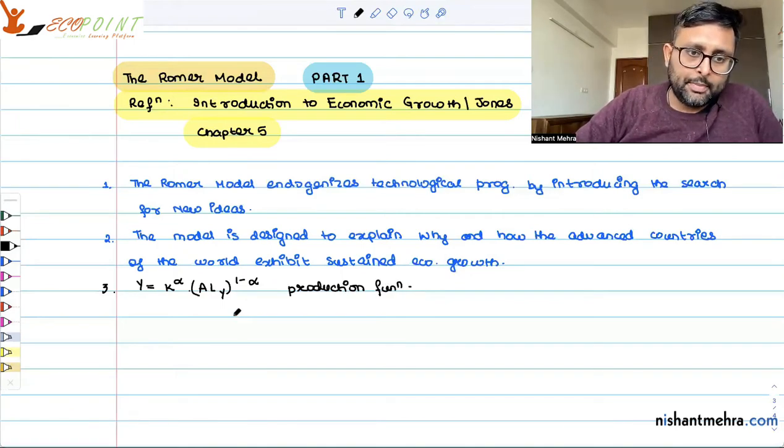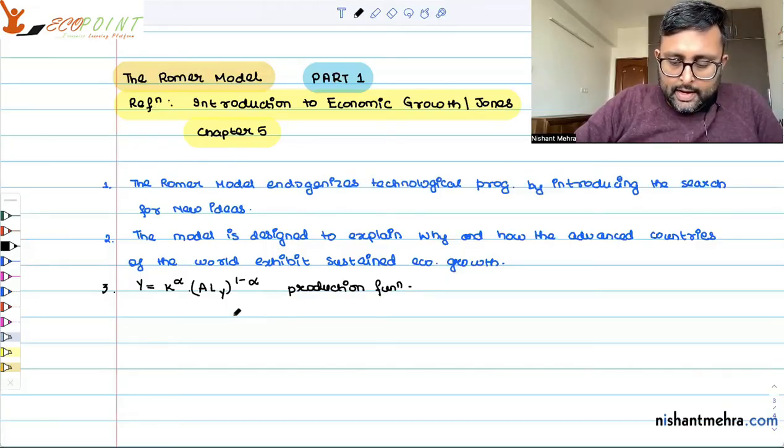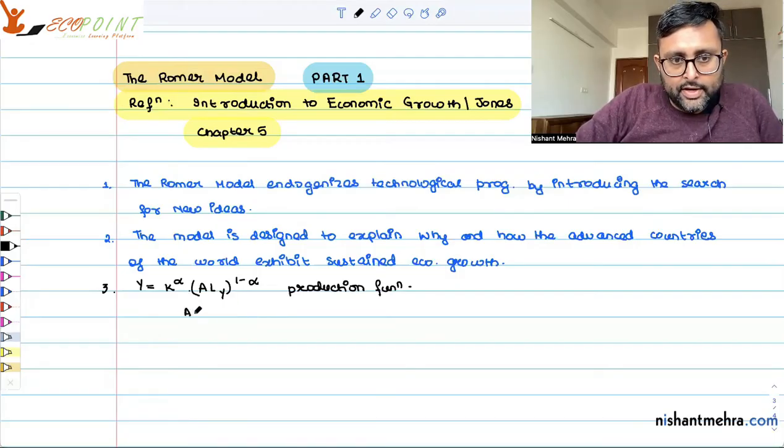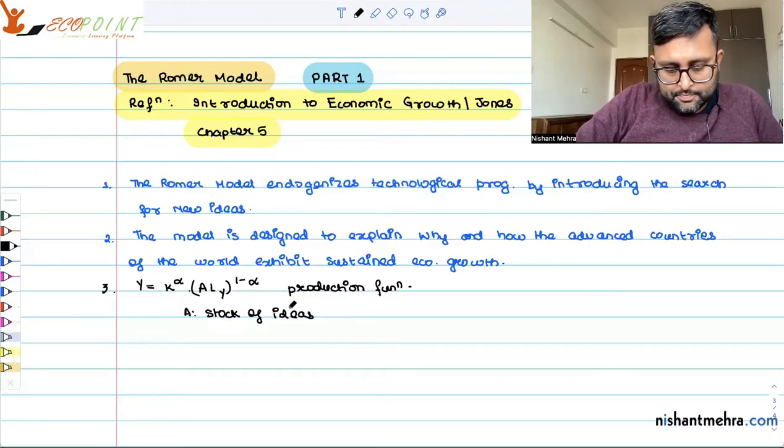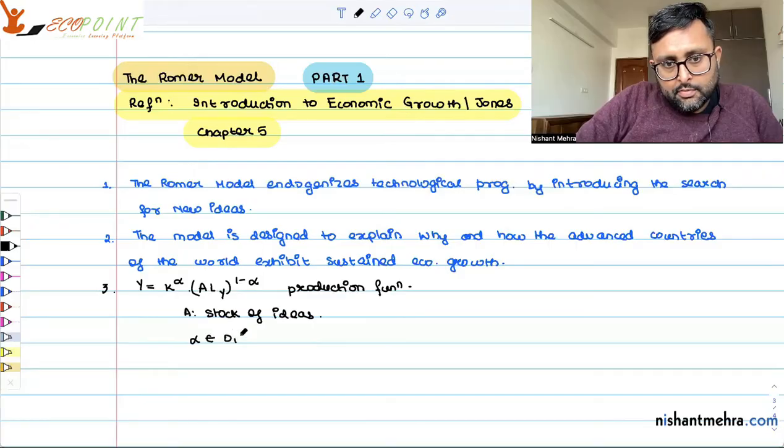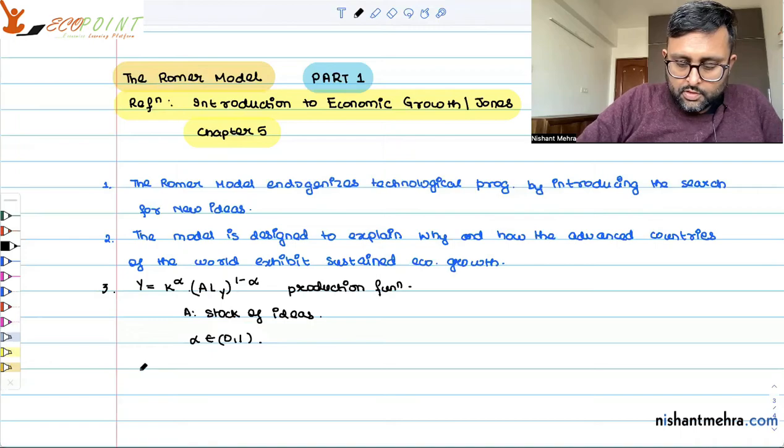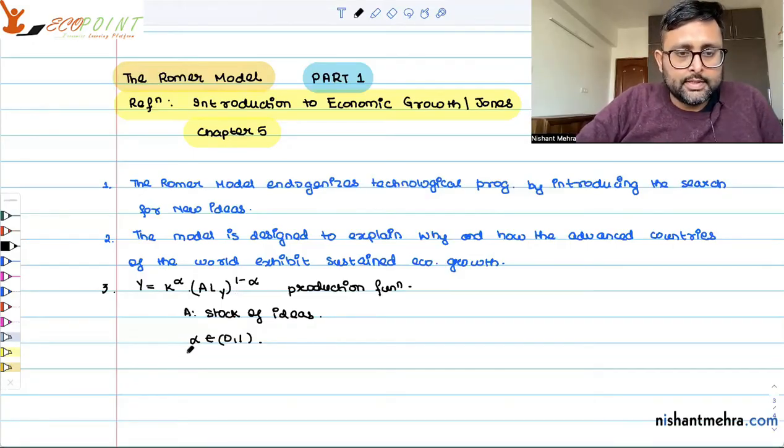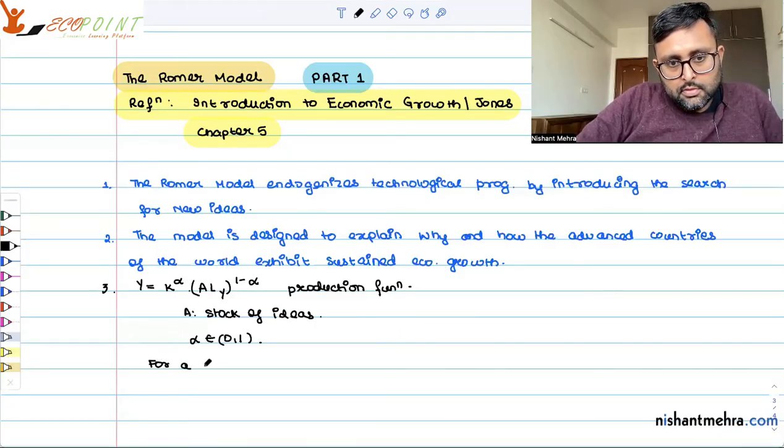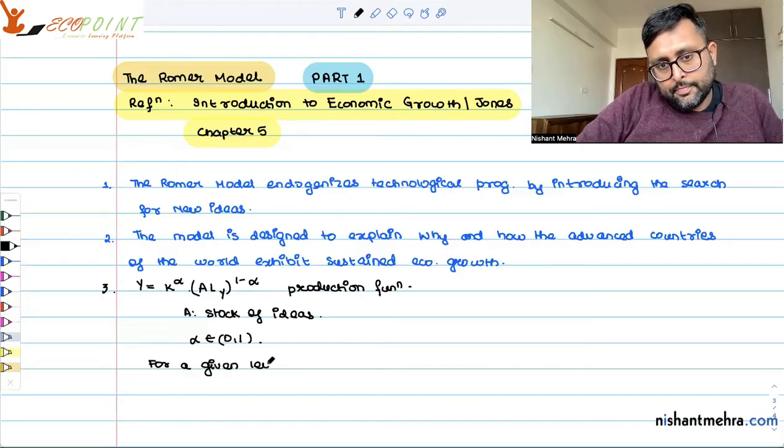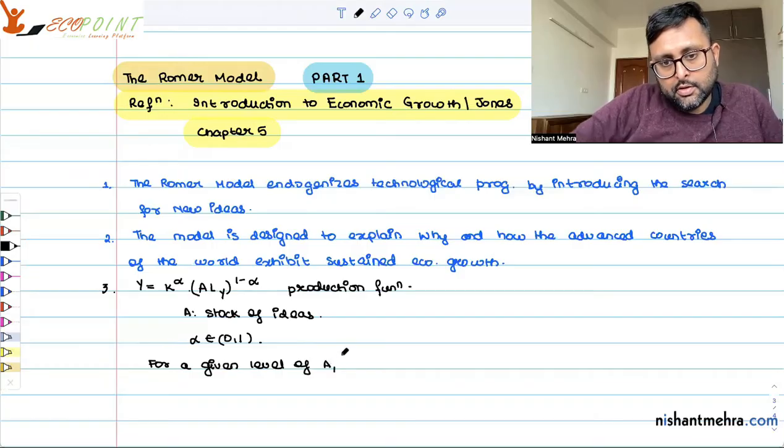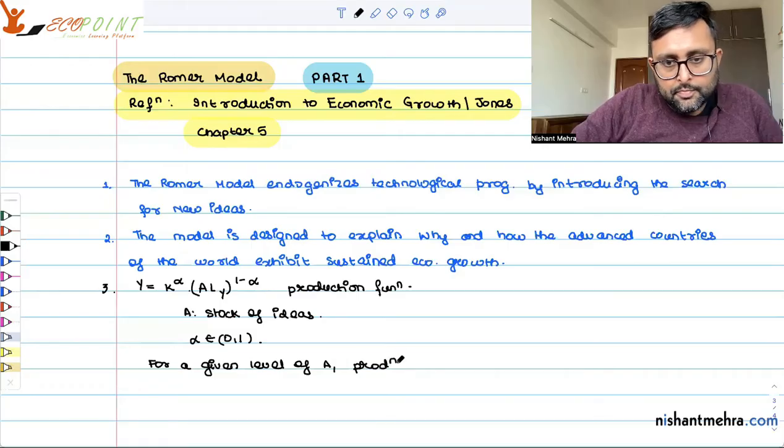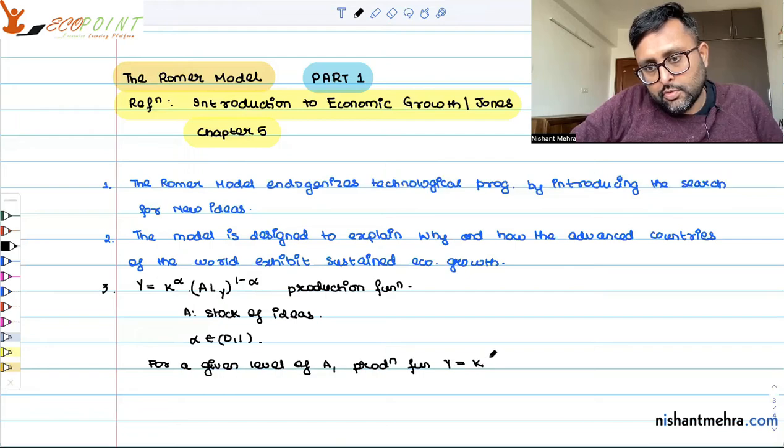This is the production function. K is the stock of capital, Ly is the stock of labor, and Y is the output, and A is the stock of ideas. So this is the new thing. Alpha is lying between 0 to 1. So for a given level of A, this production function exhibits CRS.